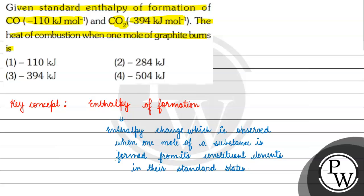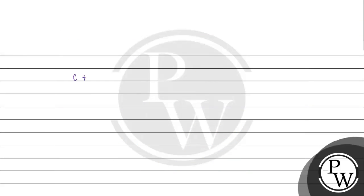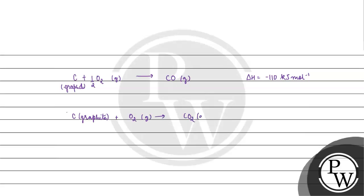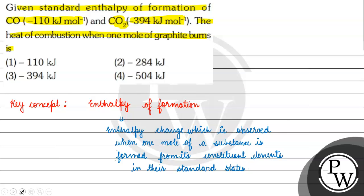If we talk about standard enthalpy of formation of carbon monoxide, then we have: carbon in graphite form plus oxygen gives carbon monoxide, with enthalpy change of minus 110 kilojoule per mole. And for carbon dioxide, the standard enthalpy of formation is minus 394 kilojoule per mole.